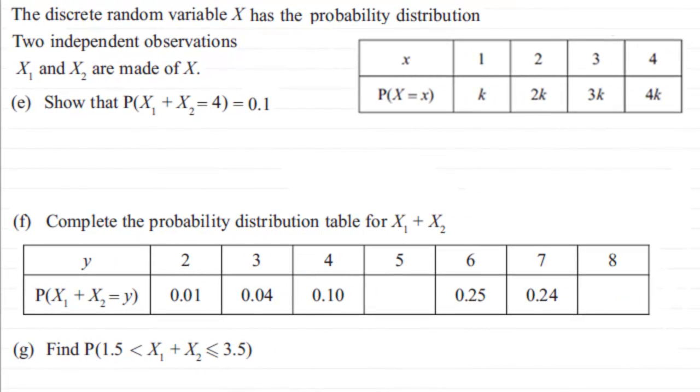Now, in the last part of this question, we were given this discrete random variable X with this probability distribution. In the previous part, we worked out that k equaled 0.1. Let's just put that down here, where k equaled 0.1. We're told now that two independent observations, X₁ and X₂, are made of the random variable X.